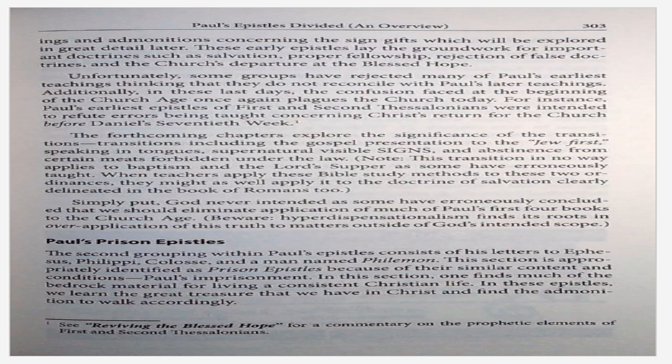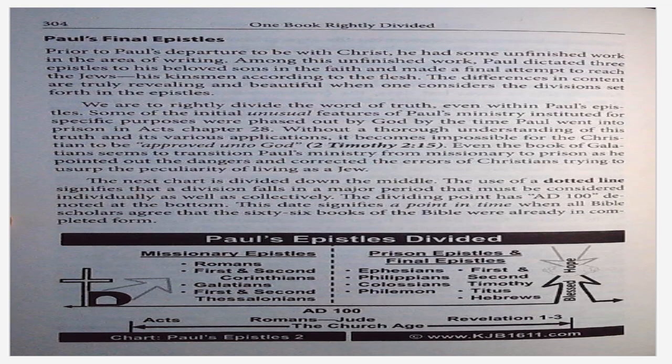Paul's prison epistles: the second grouping within Paul's epistles consists of his letters to Ephesus, Philippi, Colossae, and a man named Philemon. This section is appropriately identified as prison epistles because of their similar content and conditions — Paul's imprisonment. In this section, one finds much of the bedrock material for living a consistent Christian life. In these epistles, we learn the great treasure that we have in Christ and find the admonition to walk accordingly. Paul's final epistles.